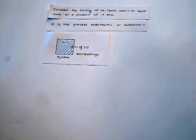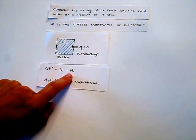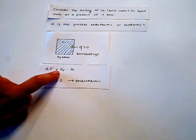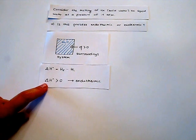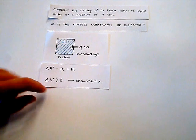We put energy to the system to melt the water. And so the enthalpy of the initial state is less than the enthalpy of the final state, so our delta H is bigger than zero and the process is endothermic.